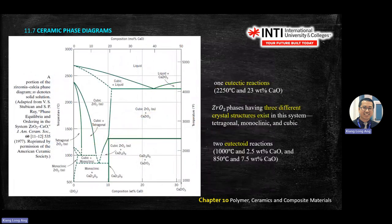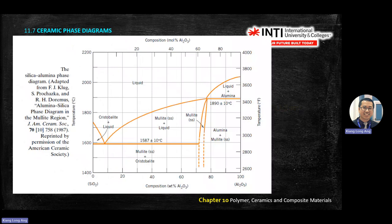There is one eutectic reaction at 2250°C. ZrO₂ has three different crystal structures: tetragonal, monoclinic, and cubic. There are two eutectoid reactions — one at 1000°C and another at 850°C. Refer to the table from this morning to check the equations for each reaction type.